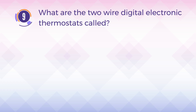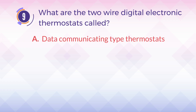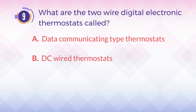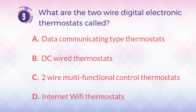Number 9. What are the two-wire digital electronic thermostats called? A. Data communicating type thermostats. B. DC wired thermostats. C. Two-wire multifunctional control thermostats. D. Internet Wi-Fi thermostats.